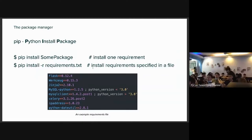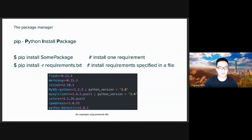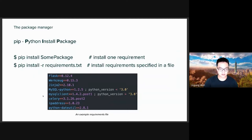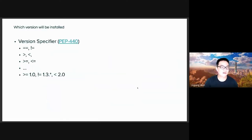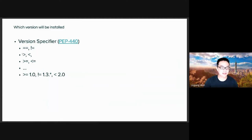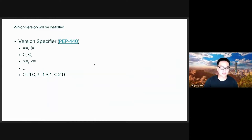Most of us are familiar with pip, which stands for Python Install Package. We can use pip to install one package with pip install followed by the package name, or if you want to install multiple packages at the same time you can use a requirements file. The format is one requirement per line — name of the requirement followed by conditions. There are multiple ways to specify versions using version specifiers: equal equal, not equal, less than, greater than, greater than or equal to, less than or equal to. You can also chain multiple conditions together separated by a comma, and pip will try to find a version that satisfies all the specifiers.